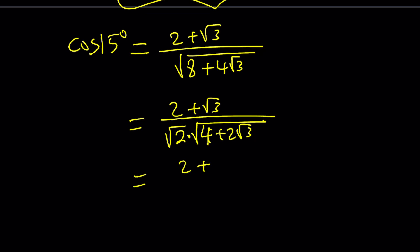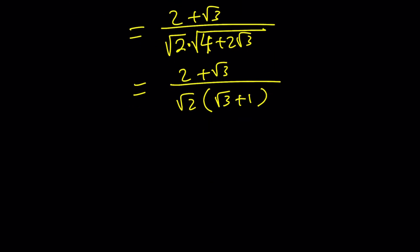(2 + √3) divided by √2 times √(3 + 1), right? Because we just used it. What can I do with this now? I can rationalize the denominator. But before that, let's go ahead and distribute. This is going to give me √6 + √2. And then obviously I'm going to multiply by the conjugate, which is √6 - √2.